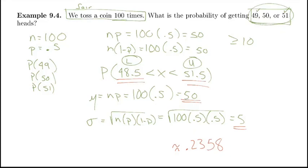Almost a 24% chance of getting 49, 50, or 51 heads after flipping a coin 100 times. That's a fairly decent number because the expected value is 50, and being just one away from 50 isn't bad. That is it for today.